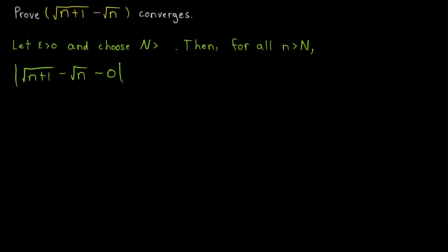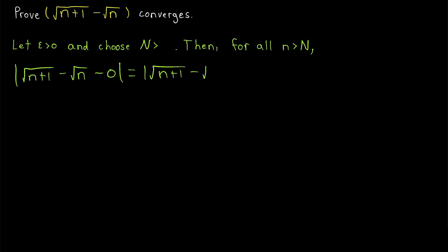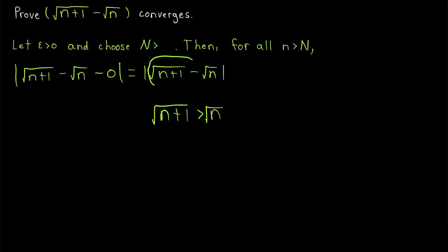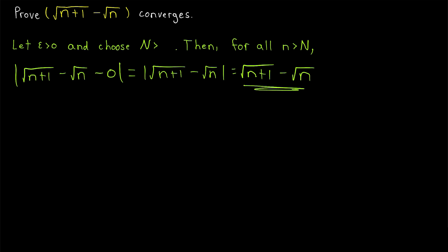I recommend giving the rest of this proof a try yourself. If you want a hint, remember to use conjugates — the conjugate of an expression like a + b is a − b. We can drop the '− 0' from the expression, leaving |√(n+1) − √n|. We don't actually need the absolute value bars here, because n+1 > n, so √(n+1) > √n, meaning √(n+1) − √n > 0. So this equals √(n+1) − √n.